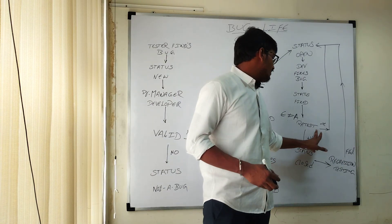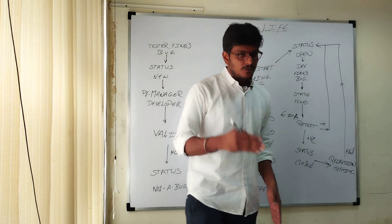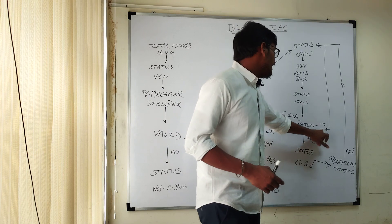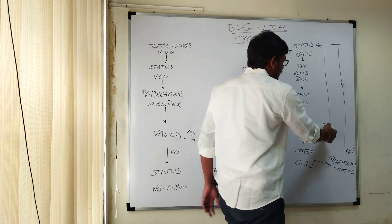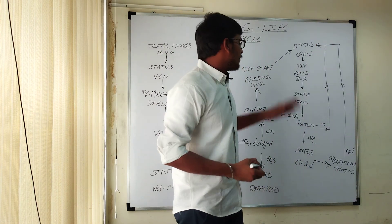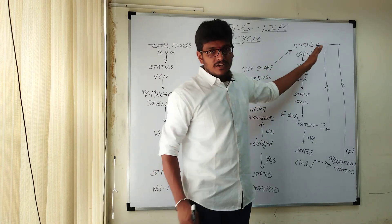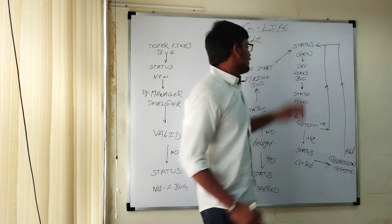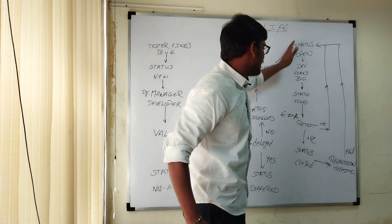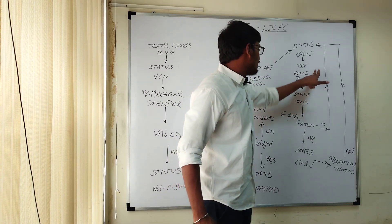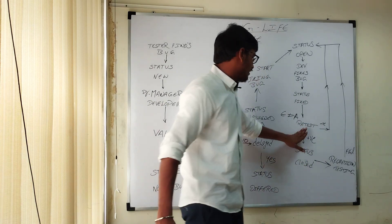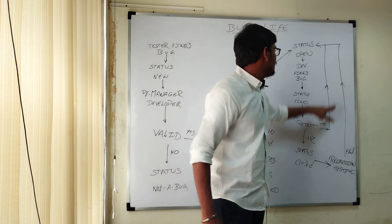If we get negative reports or negative feedback from the retest, the bug has to be reopened. The bug status will be sent back to 'Open', meaning the developer has to refix the bug based on the requirements. The same cycle repeats — the developer fixes the bug, updates the status to 'Fixed', and again the retest has to be done. Until positive reports are received, the cycle rotates in this block.